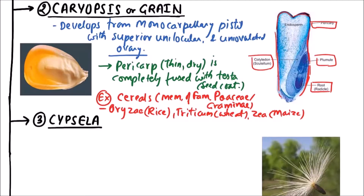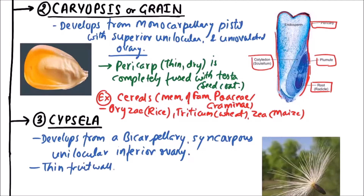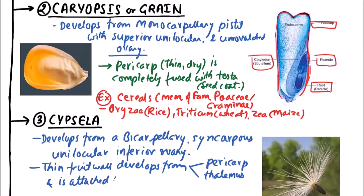The next type is cypsela. Cypsela develops from a bicarpillary syncarpous unilocular inferior ovary. The fruit wall is thin — this thin fruit wall develops from both the pericarp and the thalamus, which also participates — and it is attached to the seed at one point only.